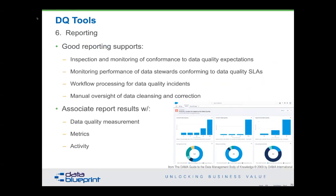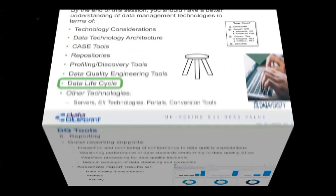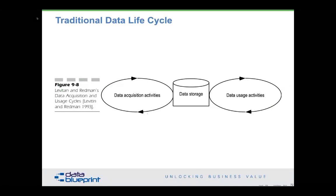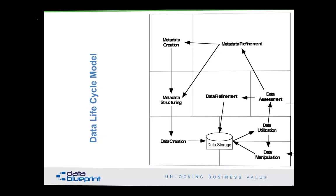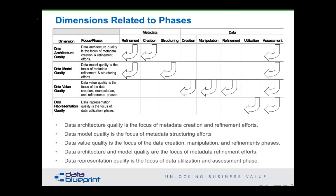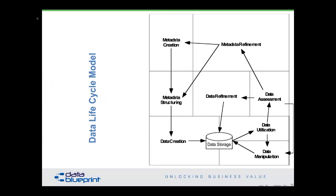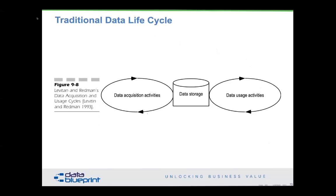Now let's dive a little bit more into some lifecycle considerations. Our good friend Tom Redman put out the original version of the data lifecycle in 1993 — you need to acquire data, store data, and use it. It turns out it's actually a bit more complicated than that. We now understand that storing data requires us to do some steps before it: create some metadata structure, define the metadata, and then we can create the data. Each of these more complex lifecycle considerations also leads to a mapping back and forth between the lifecycle portions and the types of tools you're using.